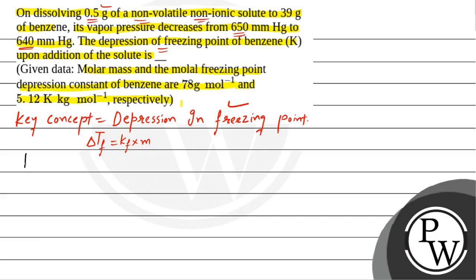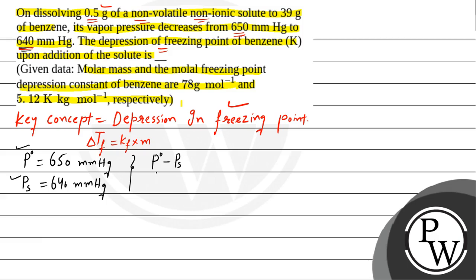Now, P⁰ is the vapor pressure of the pure solvent, which is 650 mmHg. Ps is the vapor pressure of the solution after adding 0.5 grams of non-volatile solute, which is 640 mmHg. We use the relationship for relative lowering in vapor pressure: (P⁰ − Ps) / P⁰ = i × (moles of solute / moles of solvent).